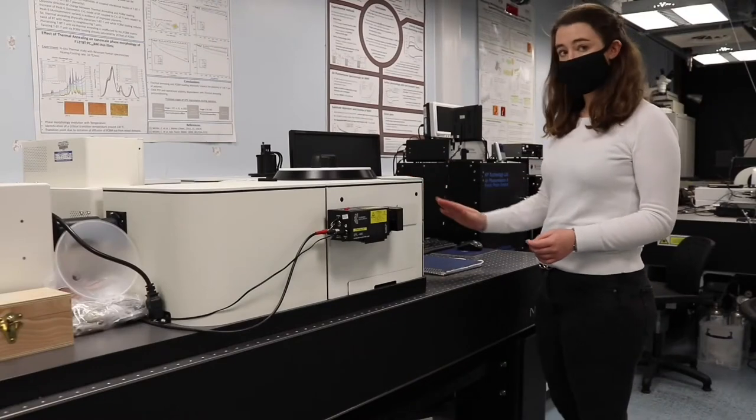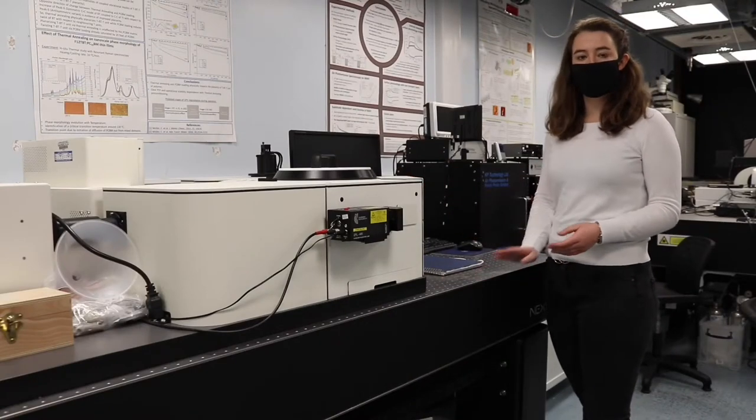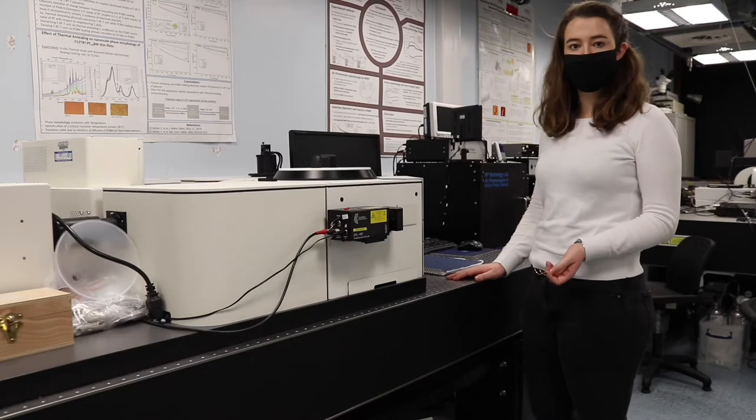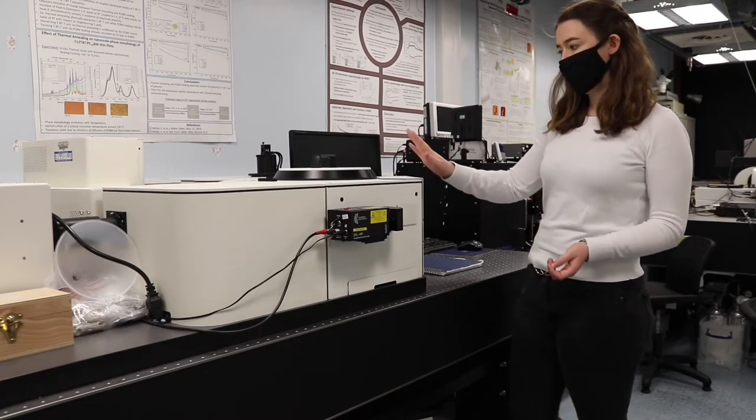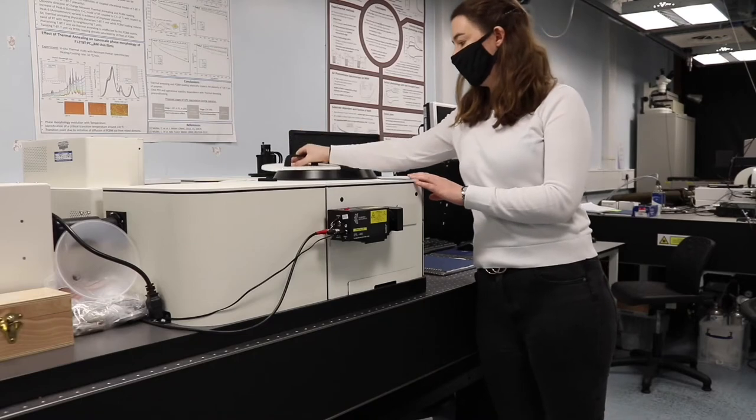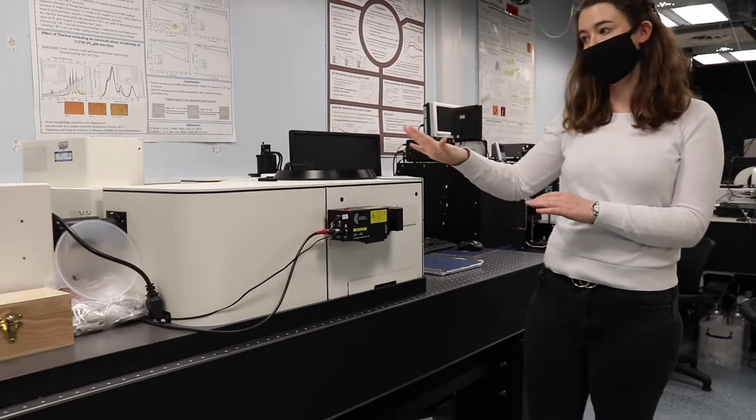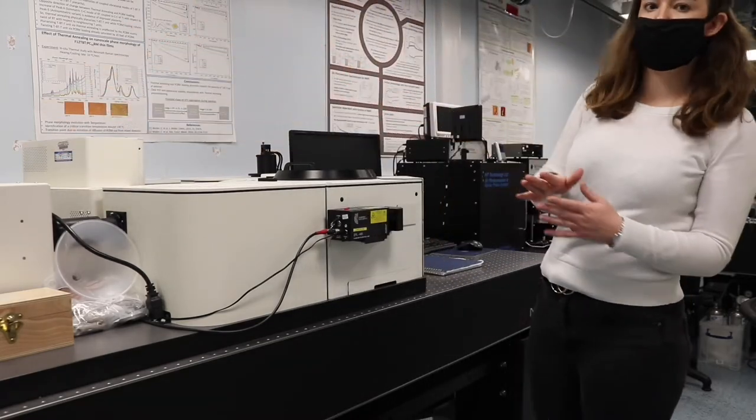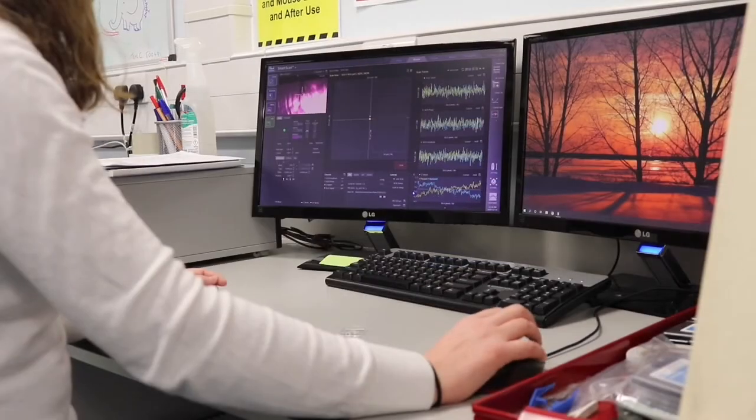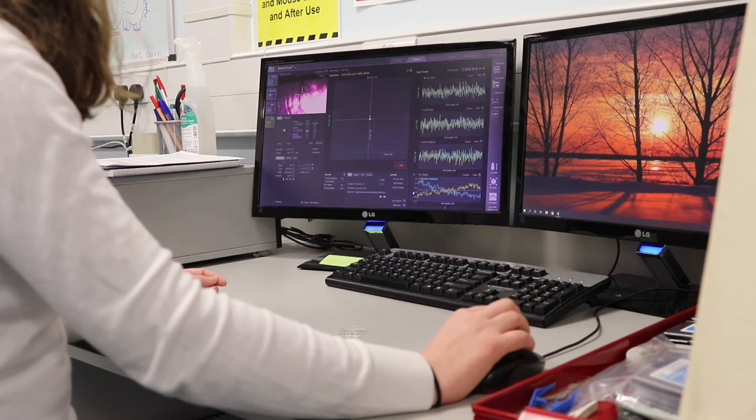This is a fluorospectrometer so we use this to do photoluminescence measurements and also time correlated single photon counting. We can do this with thin films mostly just in the sample chamber for steady state. We also have this cryostat which means that we can measure at very low temperatures and we can control the temperature right up to around 300 degrees.